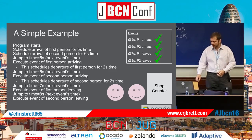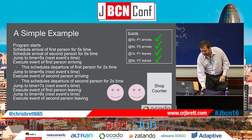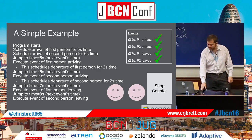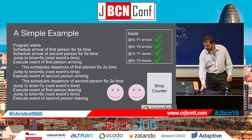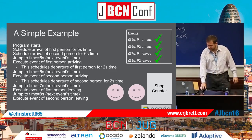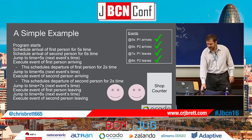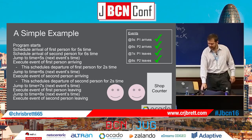Visually: we've got our list of events, currently empty, and our shop counter. First we schedule the arrival of the first person for five seconds time, adding that event to the events queue, then schedule the second person for six seconds time. We jump to five seconds to execute that first event — someone arrives and their departure is scheduled. We jump to six seconds and process the next event — the second person arrives, their departure is scheduled, and we jump to and execute each subsequent event.